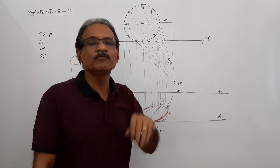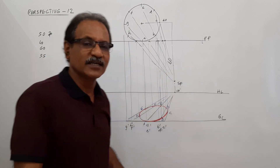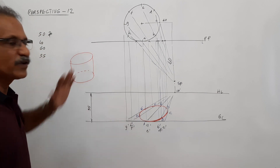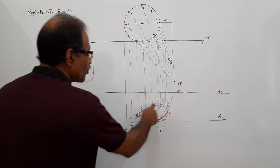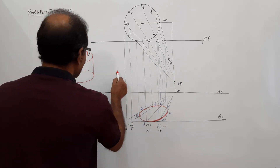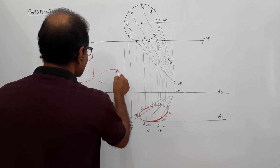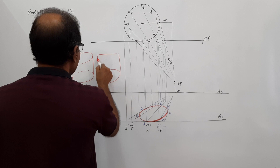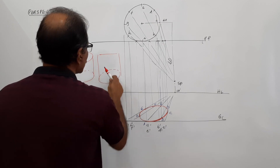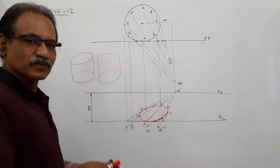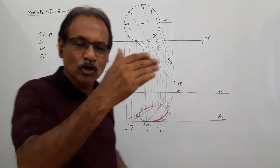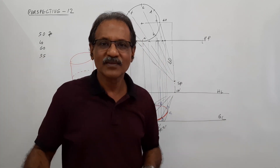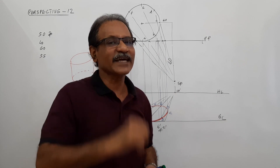The second possibility is the observer height equals the cylinder height — both are 55 mm. In this case you will have an ellipse at the bottom just like before, and then a straight line on the top. The straight line represents the top circular face. Since the observer is as tall as the object, the top of the cylinder will be seen as a line.